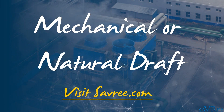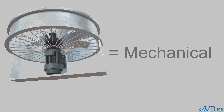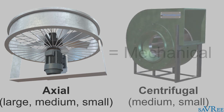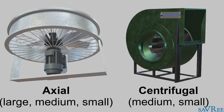Mechanical or natural draft. A cooling tower that uses a fan or multiple fans is a mechanical draft cooling tower. Cooling towers utilize axial or centrifugal fans. Axial fans are used for large, medium, and small cooling towers. Centrifugal fans are used for medium and small sized cooling towers, but are less common than axial fans.